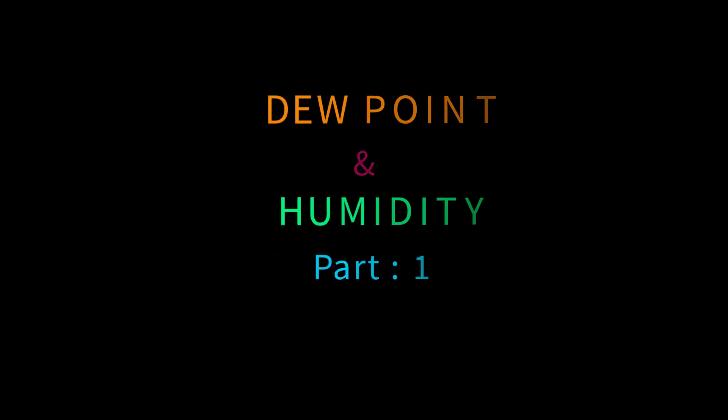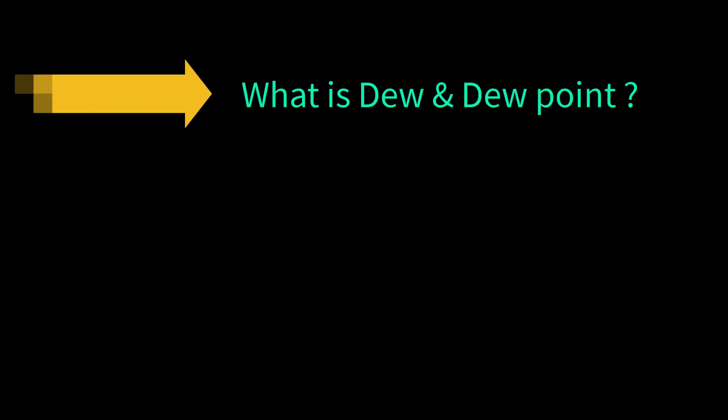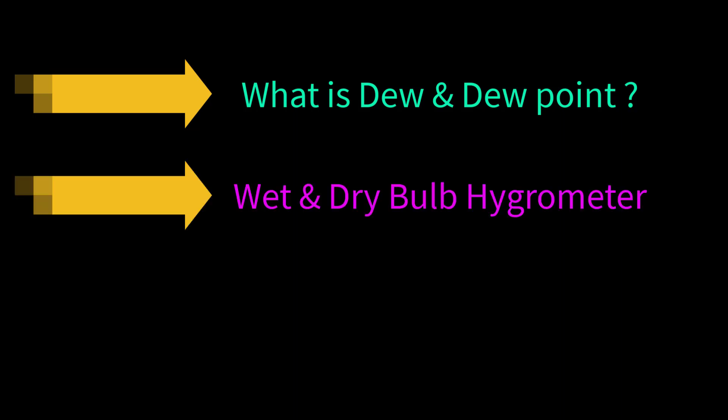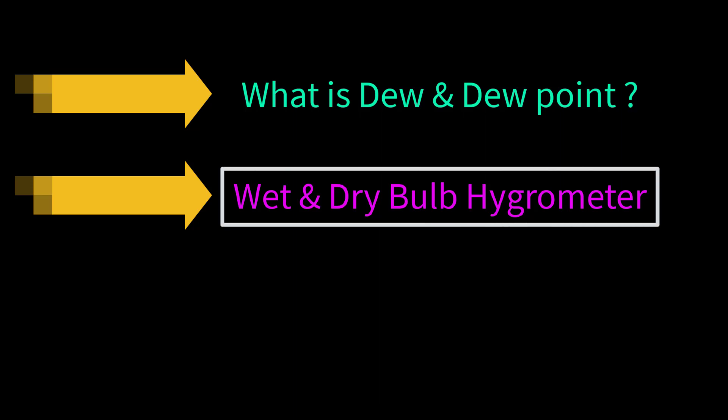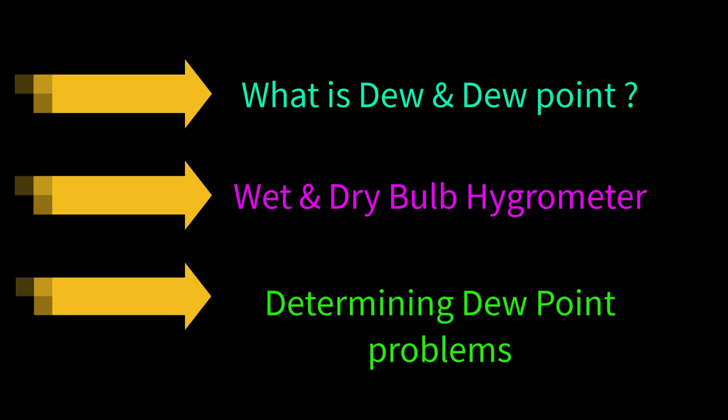Today we will learn what is dew and dew point, description of wet and dry bulb hygrometer. Without knowing the function of these apparatus, it will not be possible to find out dew point, and without finding dew point, we will not be able to determine the relative humidity of any place.